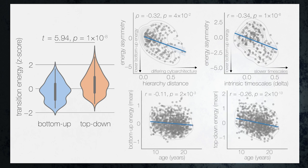Lastly, when examining developmental effects, we found that both bottom-up and top-down energy reduced throughout youth. However, we observed a stronger effect for top-down here, indicating that the size of the asymmetry may actually be converging towards zero in our sample.